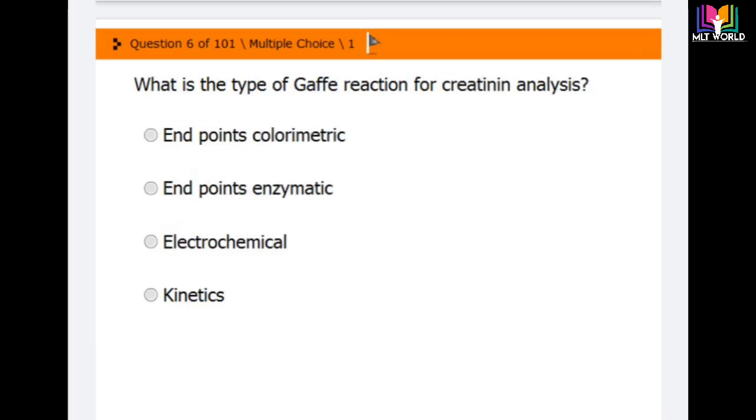Question number six: What is the type of Jaffe reaction for creatinine analysis? Here spelling is J-A-F-F-E, some mostly J is written. Options are endpoint colorimetric, endpoint enzymatic, electrochemical, and kinetic. The correct answer is option number four: kinetic is the type of Jaffe reaction for creatinine analysis.